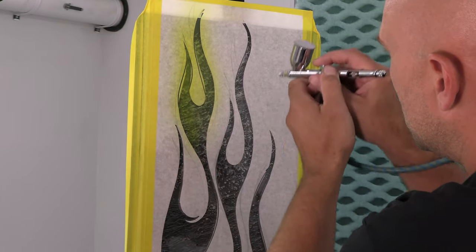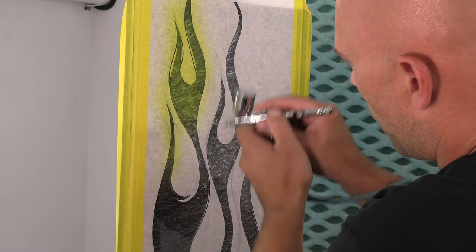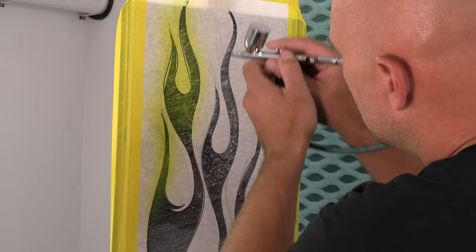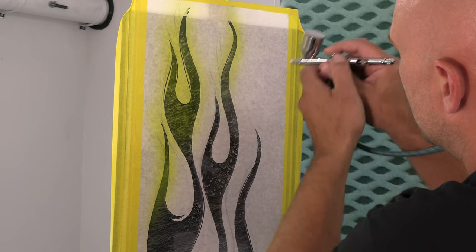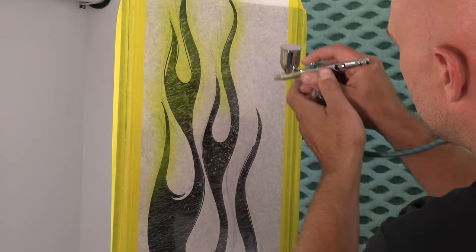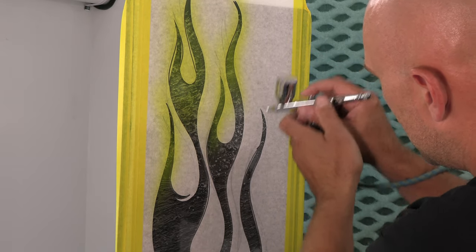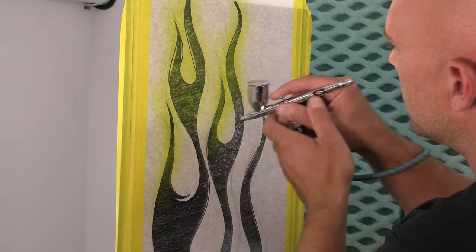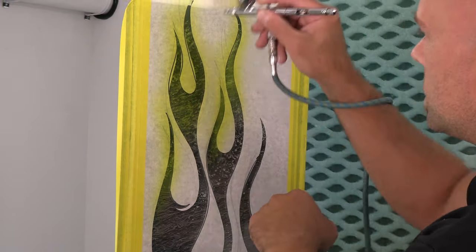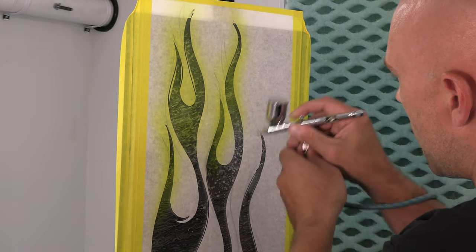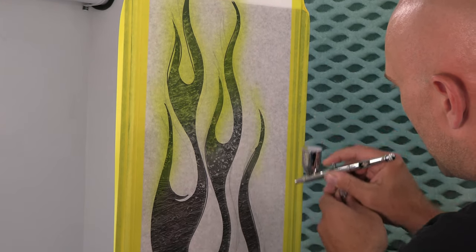I'm going to pick a spot where I want the transition to orange. I want the tips more transparent and darker in the body of the flame. When I'm not pulling the trigger for paint, I'm still on air to help dry this up, blowing a little air over the surface to help it dry faster.